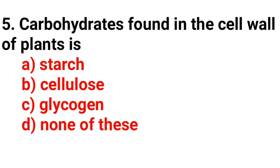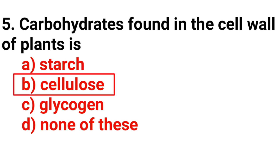Question number five: Carbohydrates found in the cell wall of plants is — the answer is option B, cellulose.